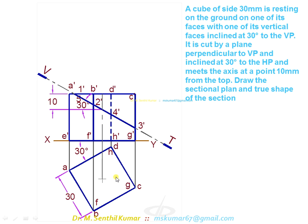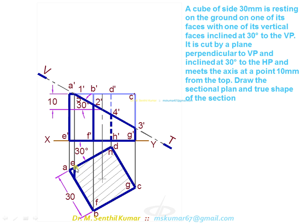So transfer all the points from front view to top view. Thereby you will get the apparent section, that is sectional top view. Draw a projector on it. You can get 1 and 5. The other points are this is 2, this is 3, and this is 4.